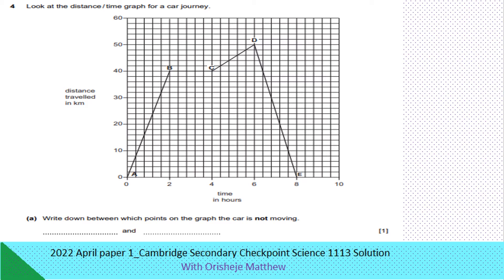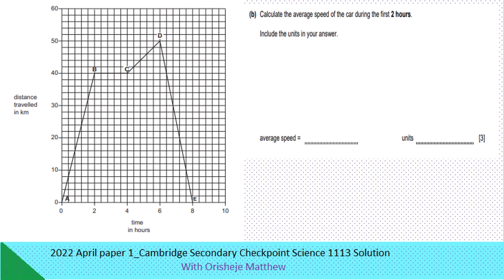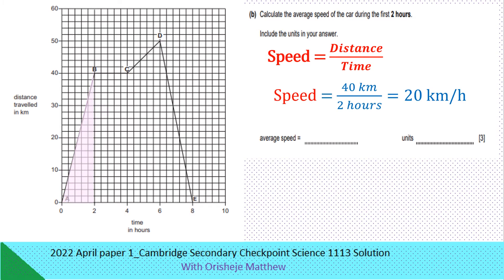Question 4: Look at the distance-time graph for a car journey, showing distance travelled against time in hours. Write down between which points on the graph the car is not moving. The car is not moving when the distance-time graph is horizontal or parallel to the time axis — that is between point B and point C. Calculate the average speed of the car during the first two hours. The total distance travelled in the first two hours is 40 km, so speed equals distance over time, giving 20 km per hour.